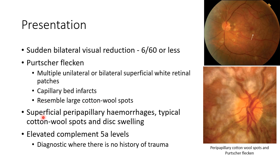Other findings in Purtscher retinopathy include superficial peripapillary hemorrhages, typical cotton wool spots, and disc swelling. These pictures show Purtscher fleckens and peripapillary cotton wool spots. There can be elevated complement 5A levels, which is diagnostic when there is no history of trauma.